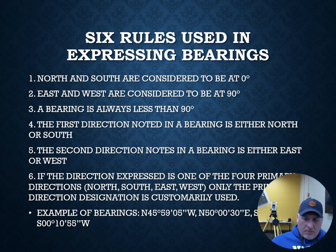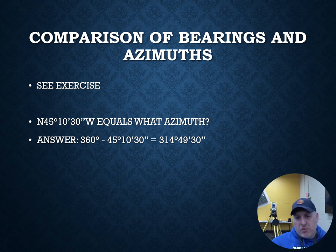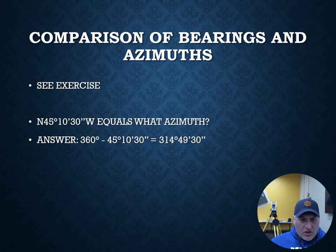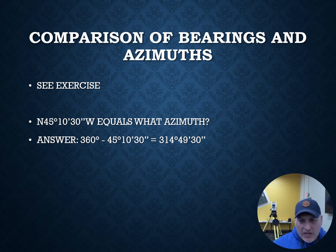Let's get into some math problems. Here's a little exercise: what is N 45°10'30" W equal to as a north azimuth? If it's a north azimuth and we're in the northwest quadrant — on the left-hand side of the north-south meridian — we take 360 degrees and subtract 45°10'30", which gives us an azimuth of 314°49'30". If you have a calculator that handles degrees, minutes, and seconds you can do that, but you can also do it by hand, which I'll explain in the next video.